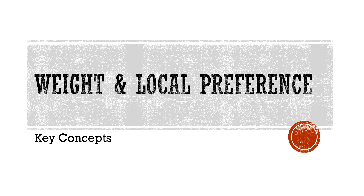Hey everyone, it's John and today we're going to be continuing the key concepts video series where I take some IP routing key concepts and break them down to give you a broad overview to help supplement your textbooks. In this video, we're going to be focusing on the first two and the strongest two BGP path attributes: weight and local preference.